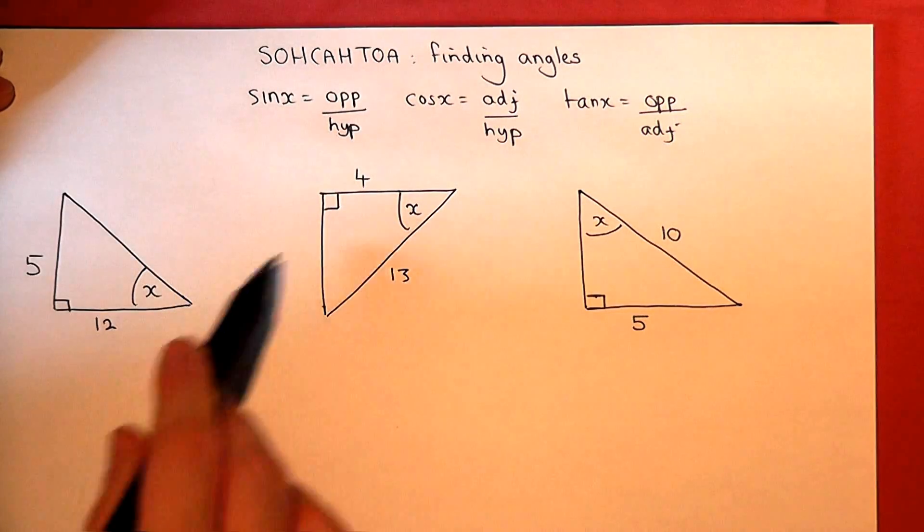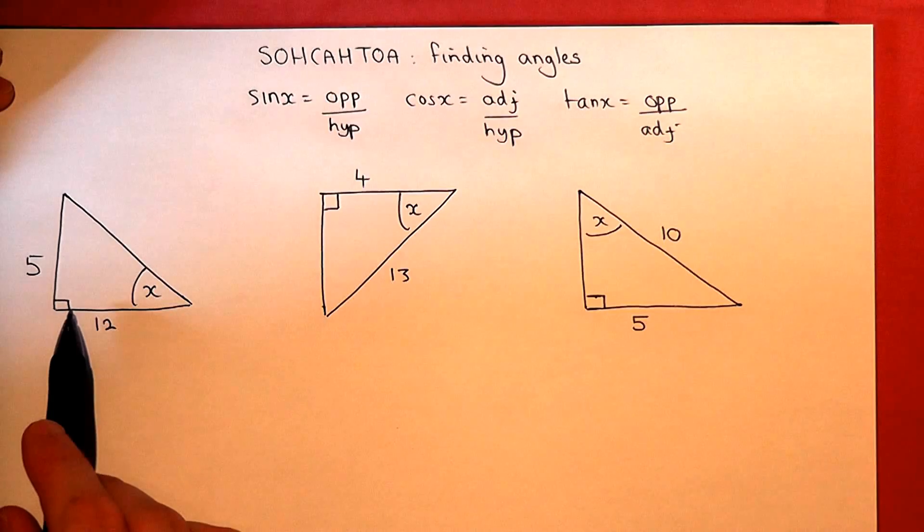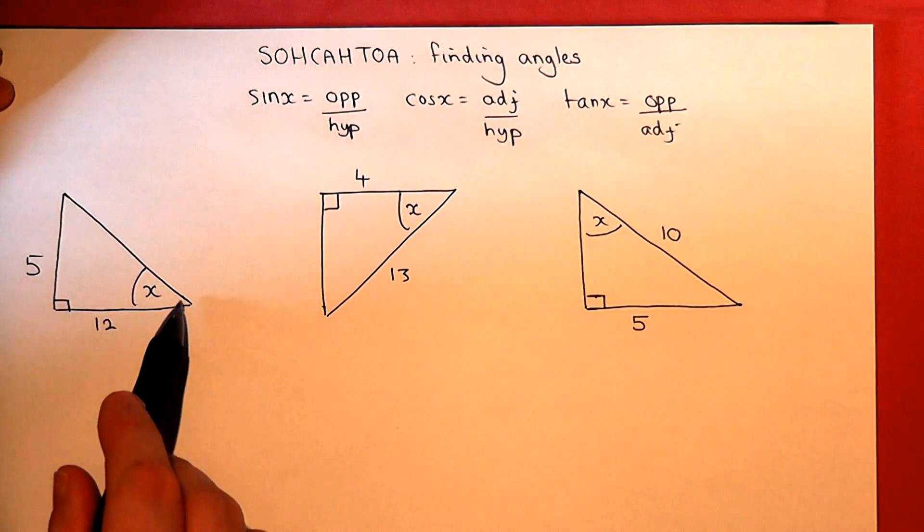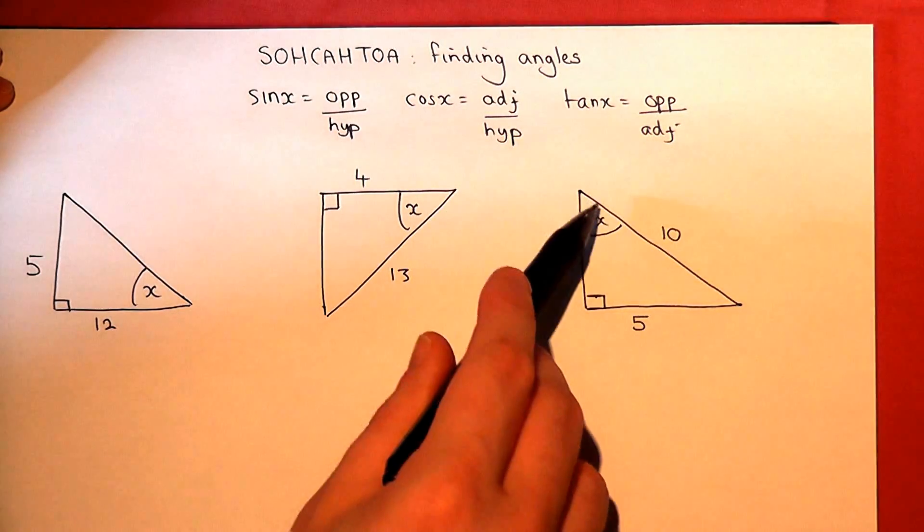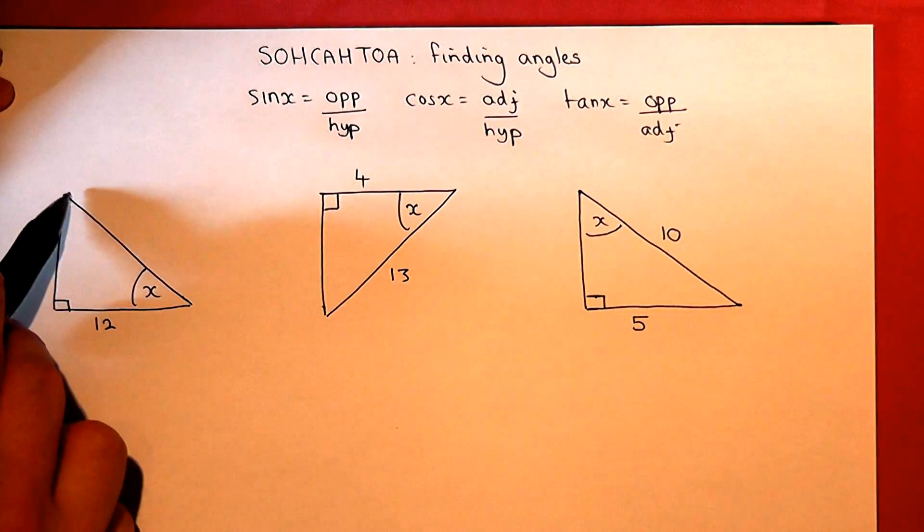Now the hypotenuse is always the longest side opposite the right angle. So hypotenuse, hypotenuse, hypotenuse. From the first triangle, that's not given.